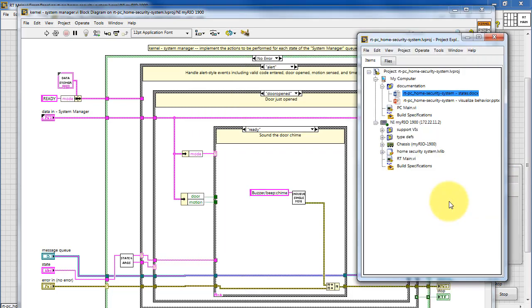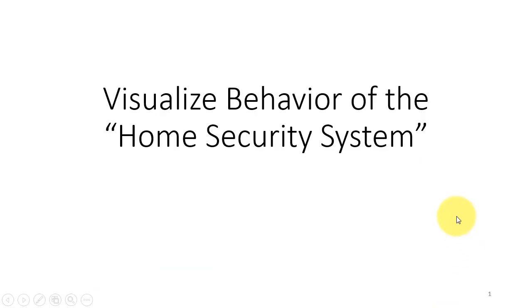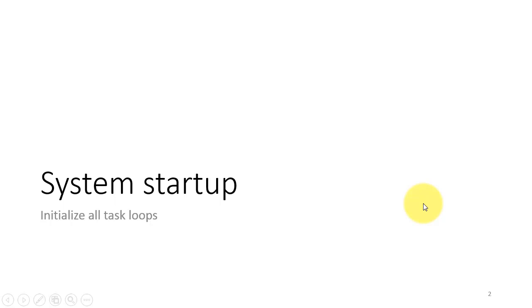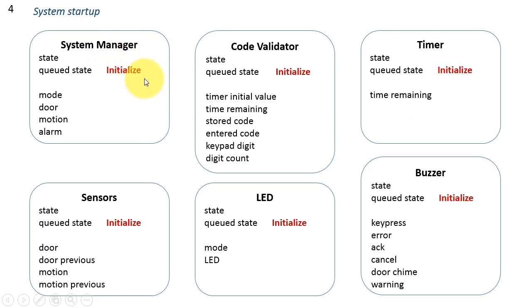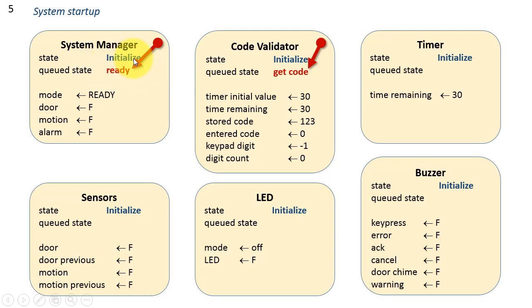This PowerPoint gives you a way to visualize the behavior of the system. Let's visualize the behavior of the home security system. When the system first starts up, each one of the process loops is initialized, and this happens by enqueuing the initialized state into each one. Advancing time, the state of each task is now initialized.